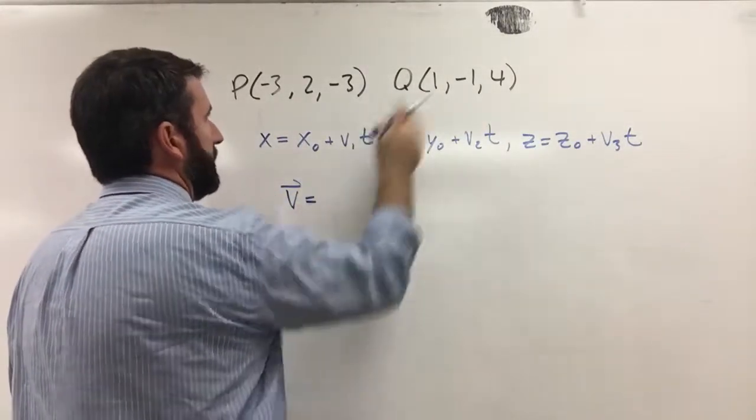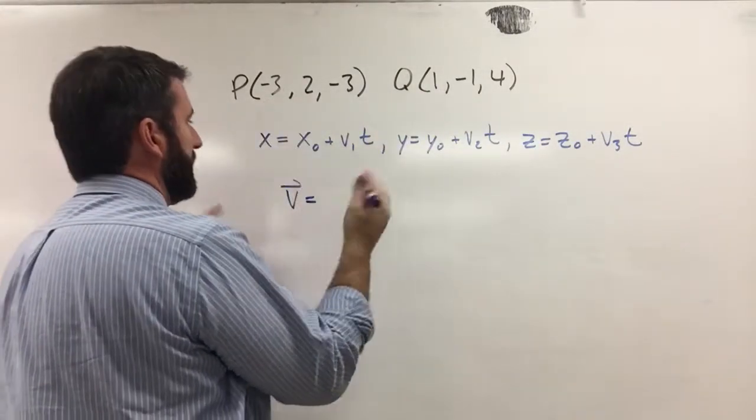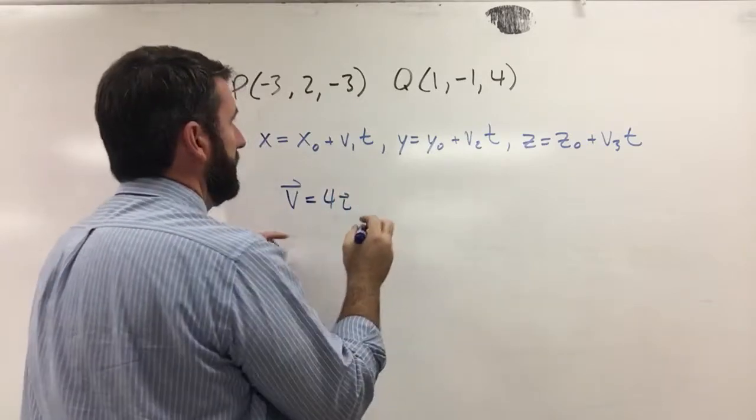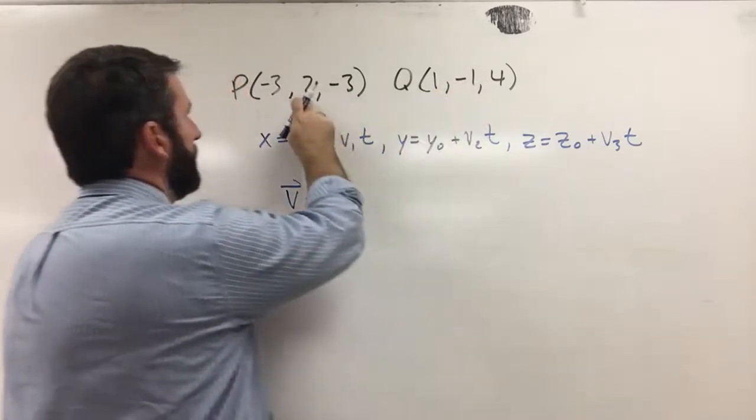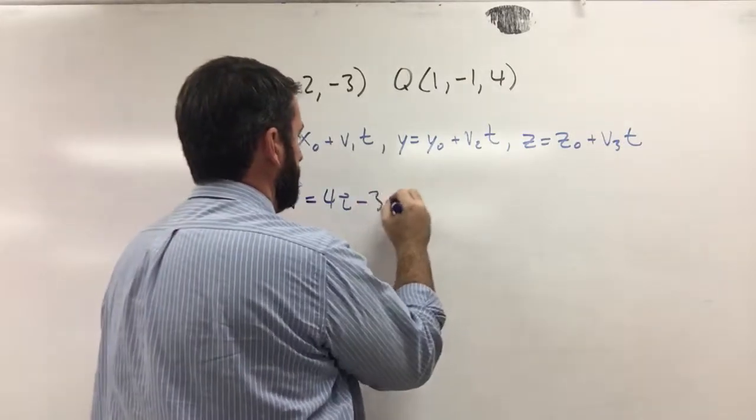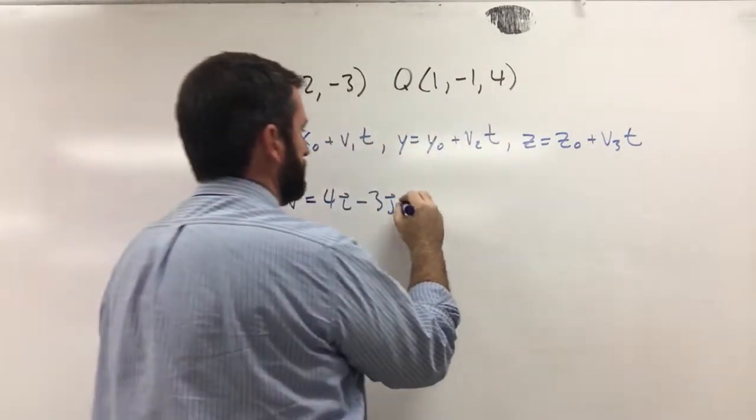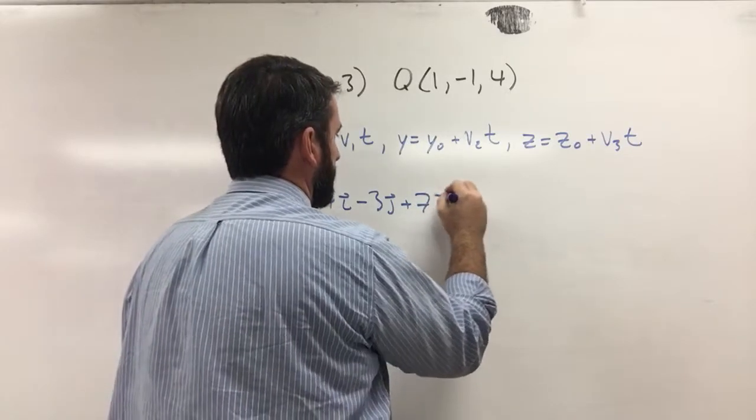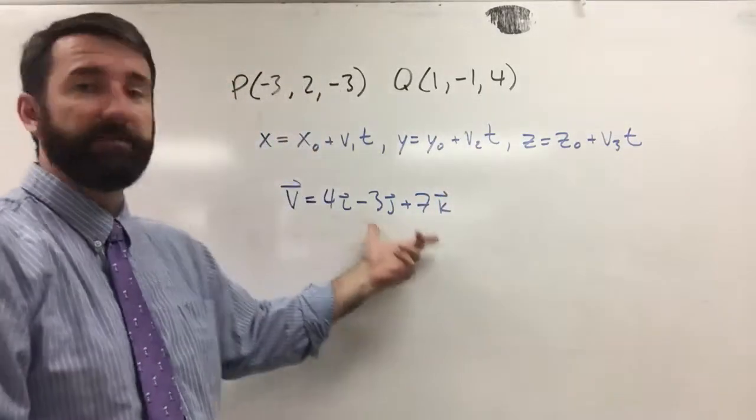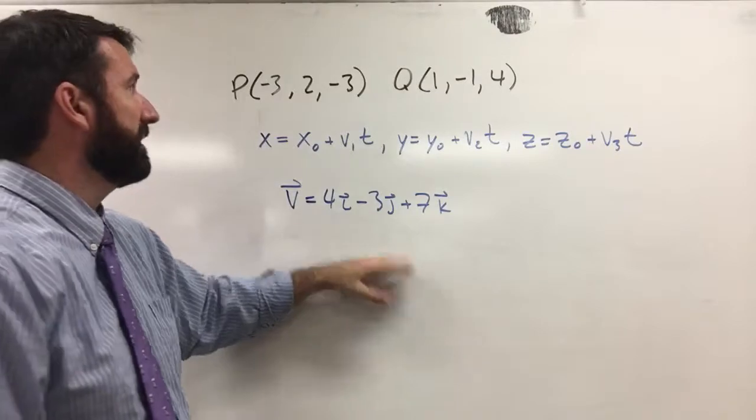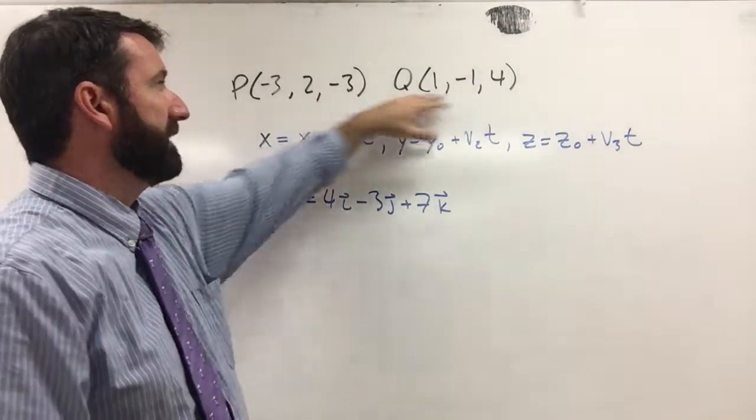So 1 minus negative 3 is going to be 4i. Negative 1 minus 2 is negative 3j. And then 4 minus negative 3 is positive 7k.